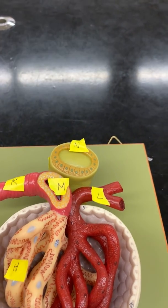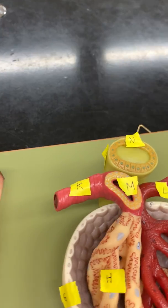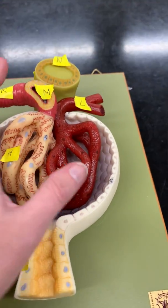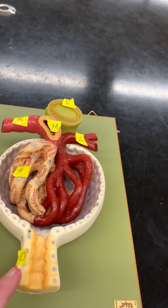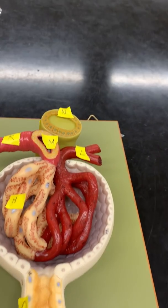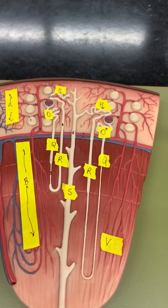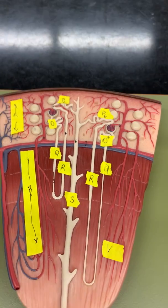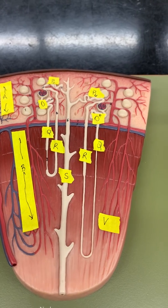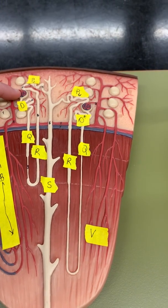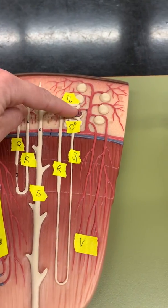O is the proximal convoluted tubule. This is in several places. So after we get into Bowman's capsule, here it immediately goes into the proximal convoluted tubule. Easier to see on the nephron. I've got two nephrons labeled. You have to get oriented to the nephron. When you get oriented to the nephron, you find the glomerulus. So here's the glomerulus, and here's the glomerulus.